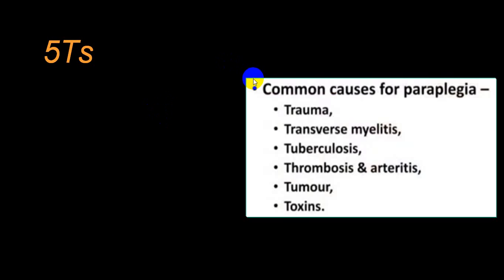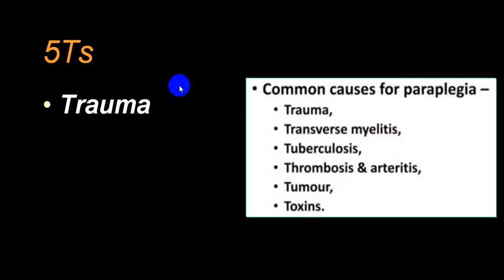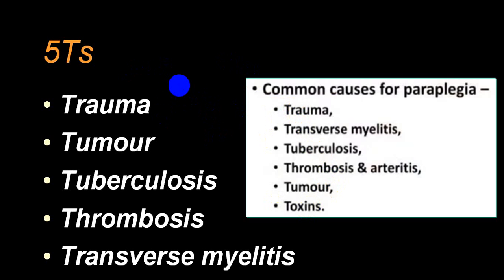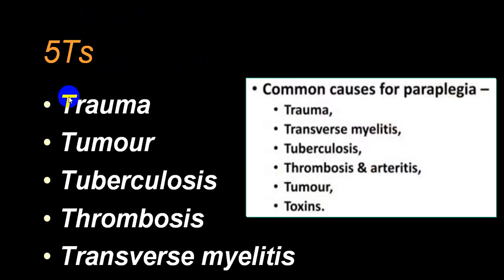The common causes of paraplegia can be remembered as six T's: Trauma, Transverse myelitis, Tuberculosis, Thrombosis (vascular), Tumor, and Toxins. Some mnemonics mention only five T's excluding toxins. All these causes begin with T: trauma, tumor, tuberculosis, thrombosis, transverse myelitis — and don't forget toxins, particularly tick toxins.